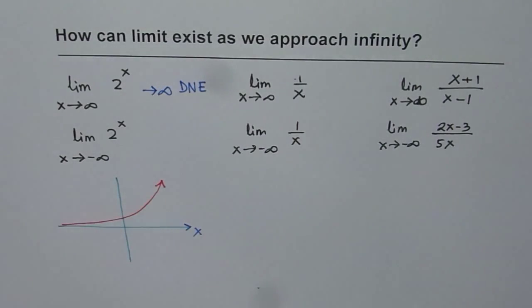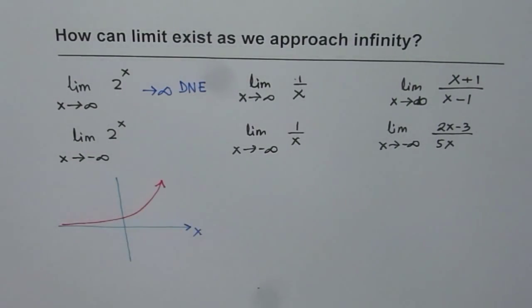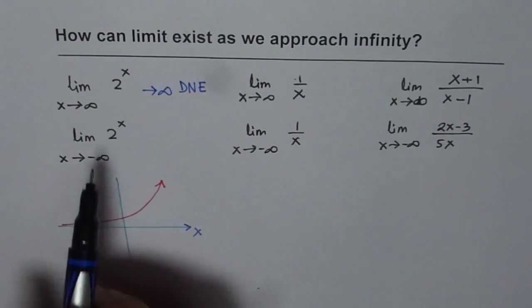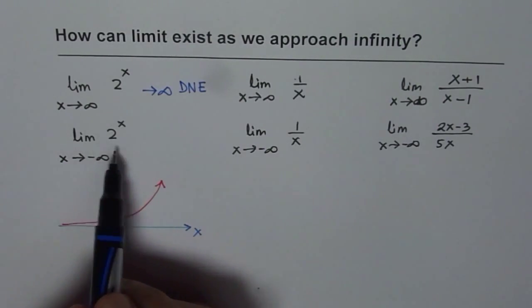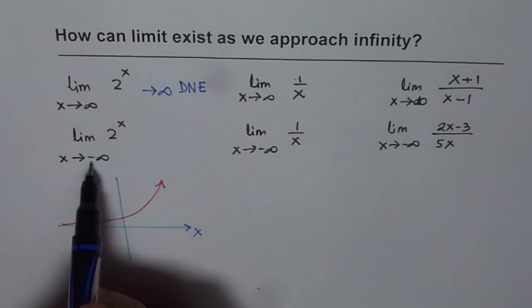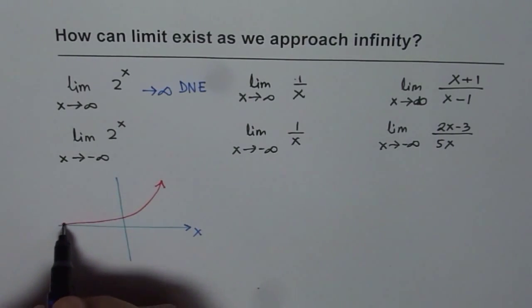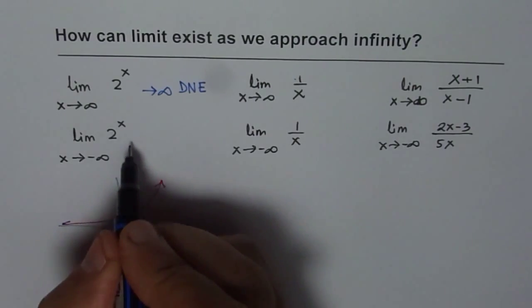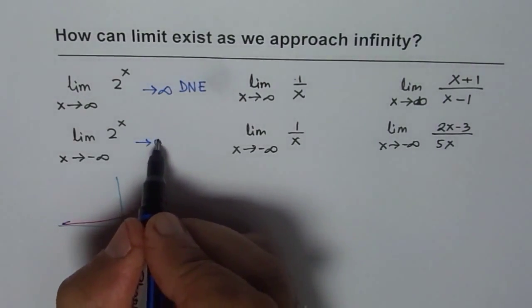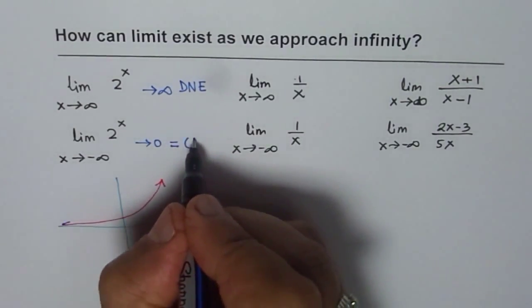In this case, we say that the limit does not exist, because infinity is not a valid number. Therefore, when x is approaching positive infinity, the limit does not exist. Now let's look at the other case: the same function 2 to the power of x — what happens when x approaches negative infinity? As we see from the graph, as x approaches negative infinity, the function approaches 0.